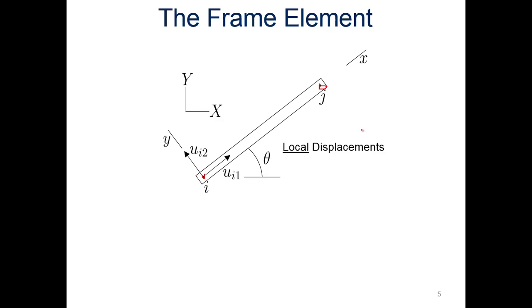ui two represents the lateral displacement, so that's gonna be in our y direction. The x and y here, lowercase, that's local coordinates. So then if we go to ui three, that's gonna be the rotation that's occurring at node i. So one is axial, two is lateral, and three is rotation.